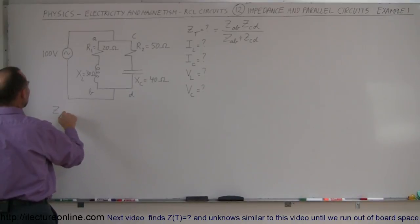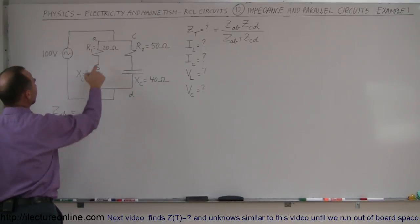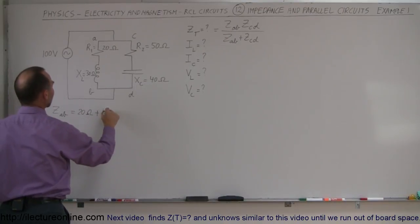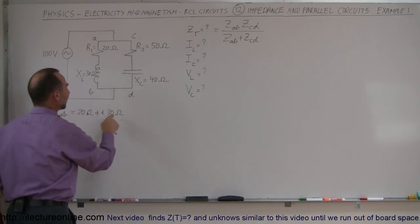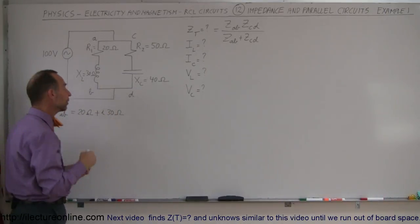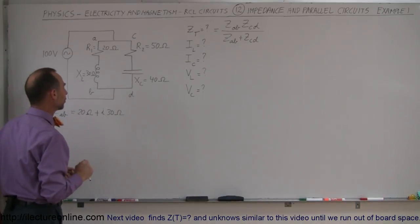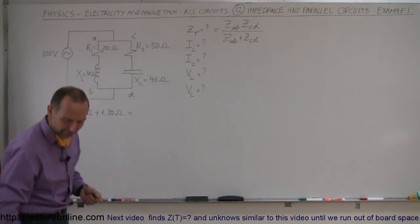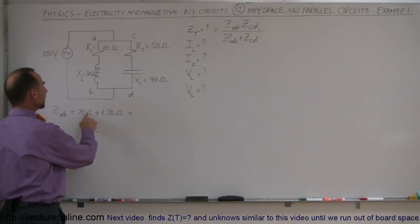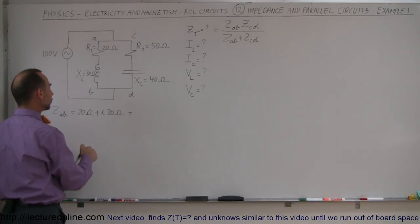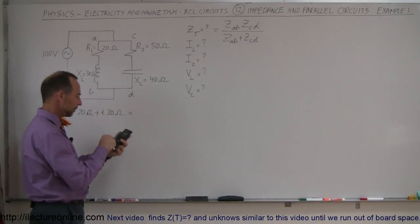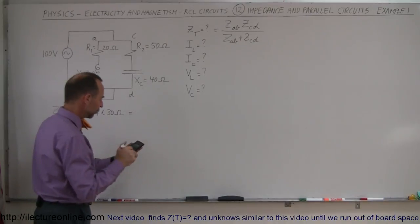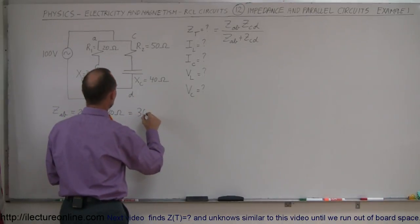The impedance going from A to B — the branch with the inductor — is 20 ohms plus i times 30 ohms. Since it's an inductor, it's 90 degrees ahead of the resistor, so we write plus i times 30 ohms. To find the magnitude, we take the square root of 20 squared plus 30 squared, which gives us 36 ohms.